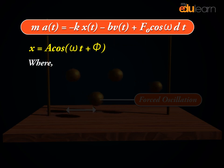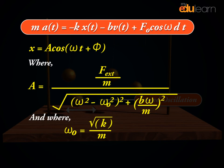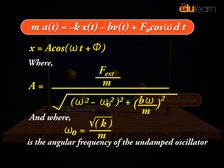Where A equals F external by M by root omega square minus omega 0 square whole square plus B omega by M whole square. And where omega 0 equals root K by M is the angular frequency of the undamped oscillator, B equals 0.